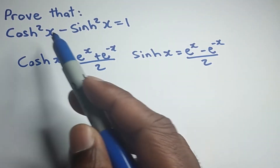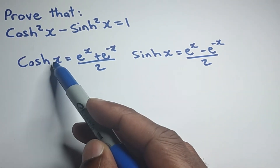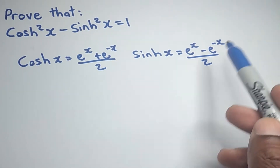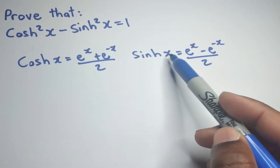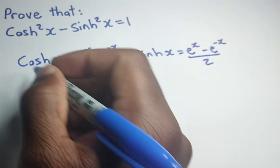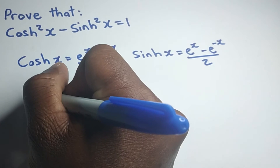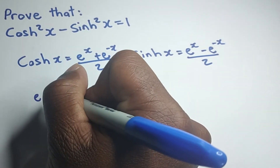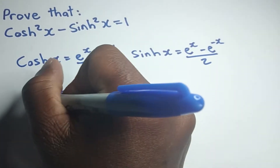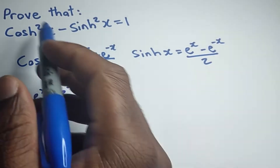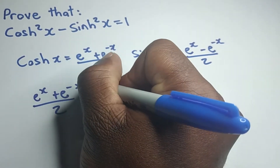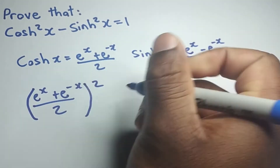What we can do now is replace hyperbolic cos of x with e to the x plus e to the minus x over 2. So we are going to do that now — we replace the hyperbolic cos of x with e to the x plus e to the minus x over 2. And here we have hyperbolic cos squared of x, so we are going to square this as well.